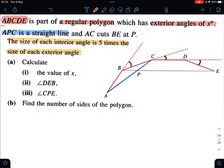We have ABCDE is part of a regular polygon which has exterior angles of x degrees. APC is a straight line, and AC cuts BE at P. We know that each interior angle is 5 times the size of each exterior angle.